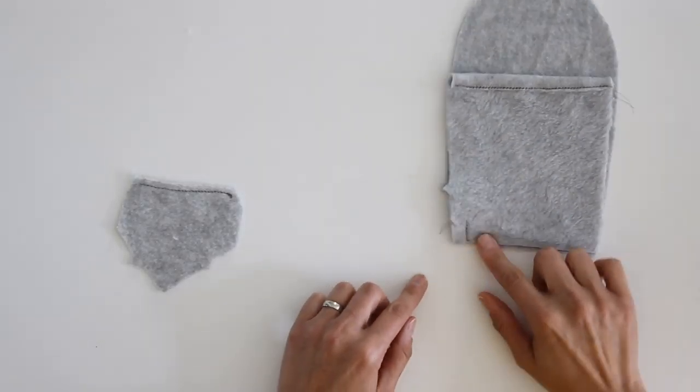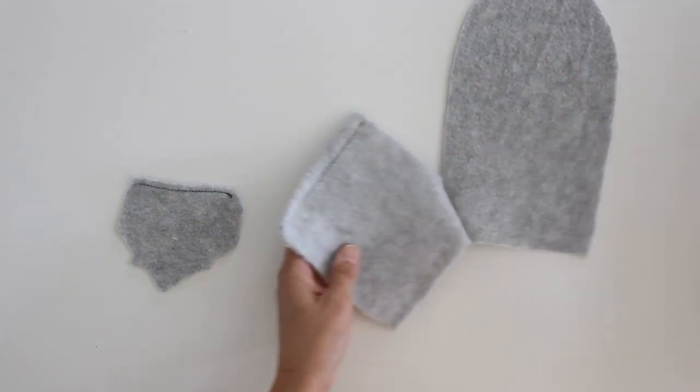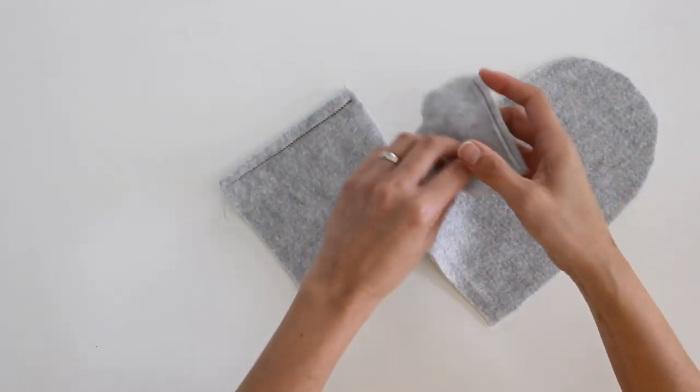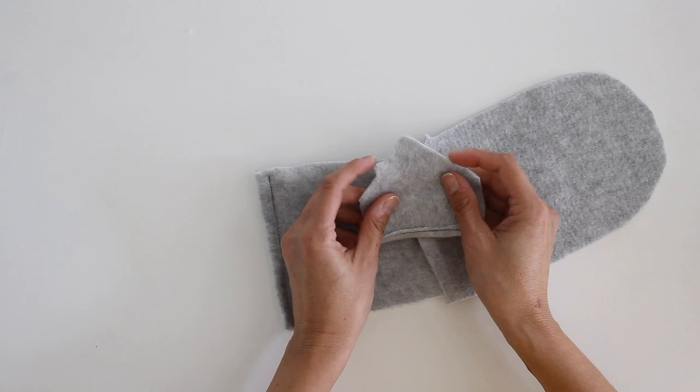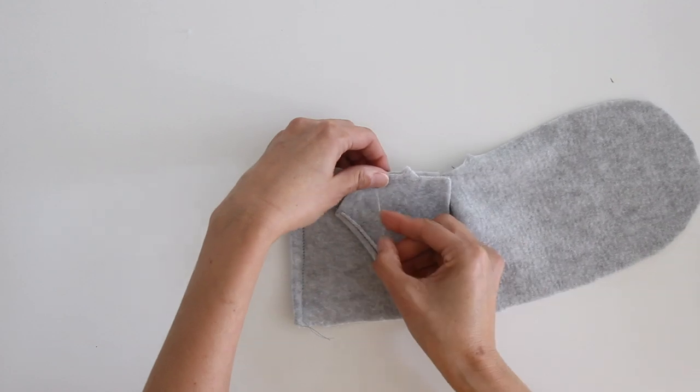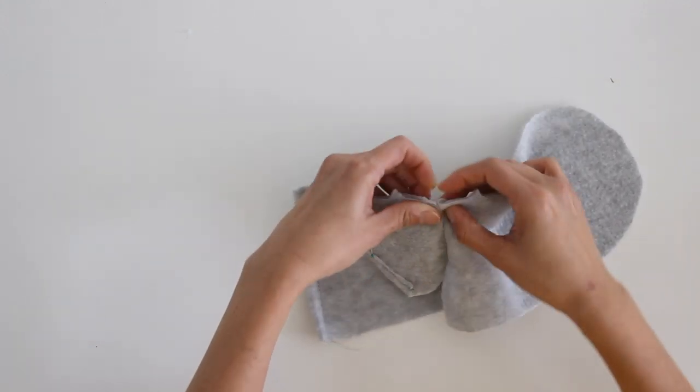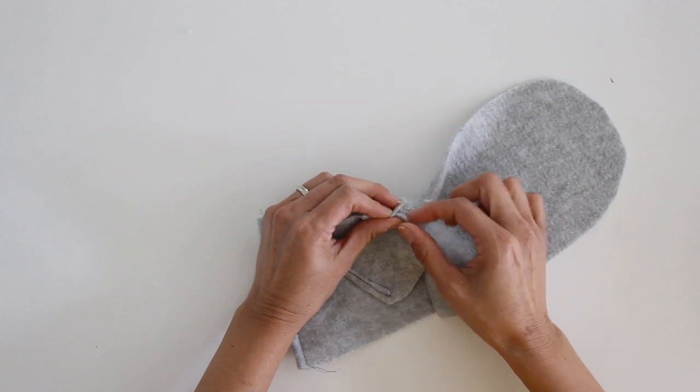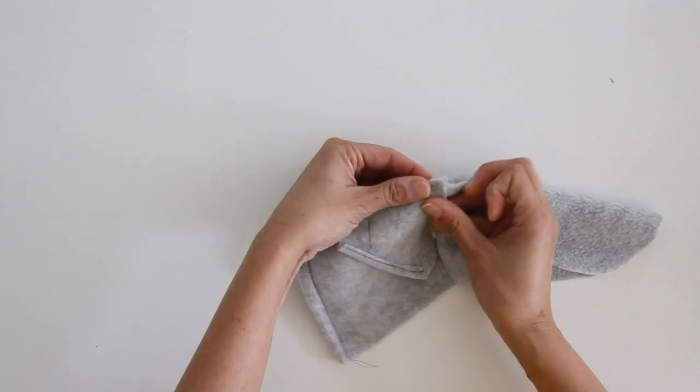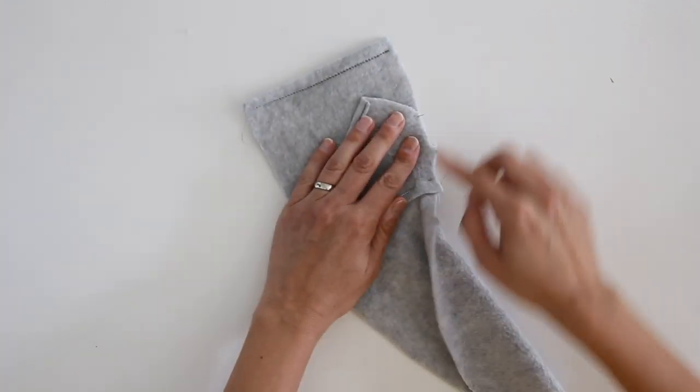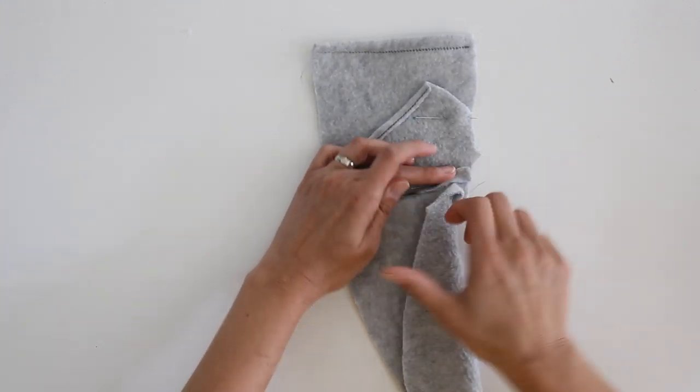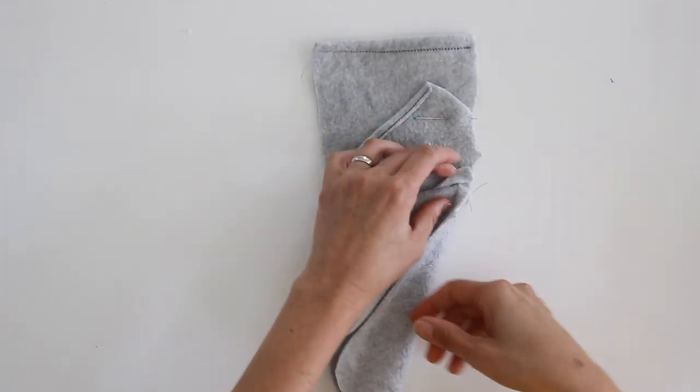Once you've got that stitched, then what you want to do is you're going to be putting your thumb gusset in. The thumb gusset has the little notches that I've cut to match. So I'm going to put this right sides together, and the edges of my thumb gusset and my other fabric, including that seam allowance edge, those should match. And then, of course, my notches match as well. Then I'm going to stitch down this seam just until I hit that little spot where the first seam that I sewed starts.